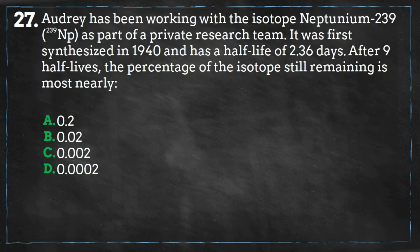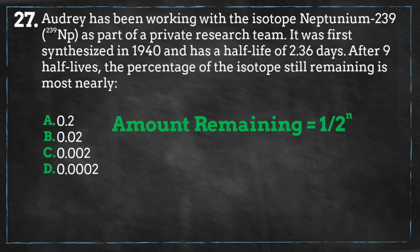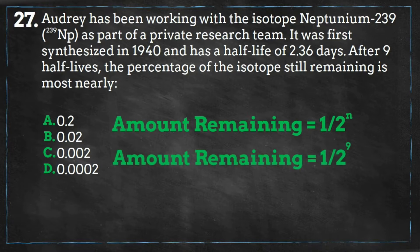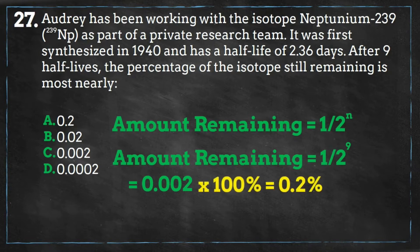To figure out how much material is left after a specific number of half-lives, use this equation: the amount remaining is equal to 1 over 2 raised to the power of the quantity of half-lives that have occurred. We plug in our information — 9 half-lives — and we get 0.002. Since we need a percentage, we multiply by 100%, giving us 0.2%, which is answer A.